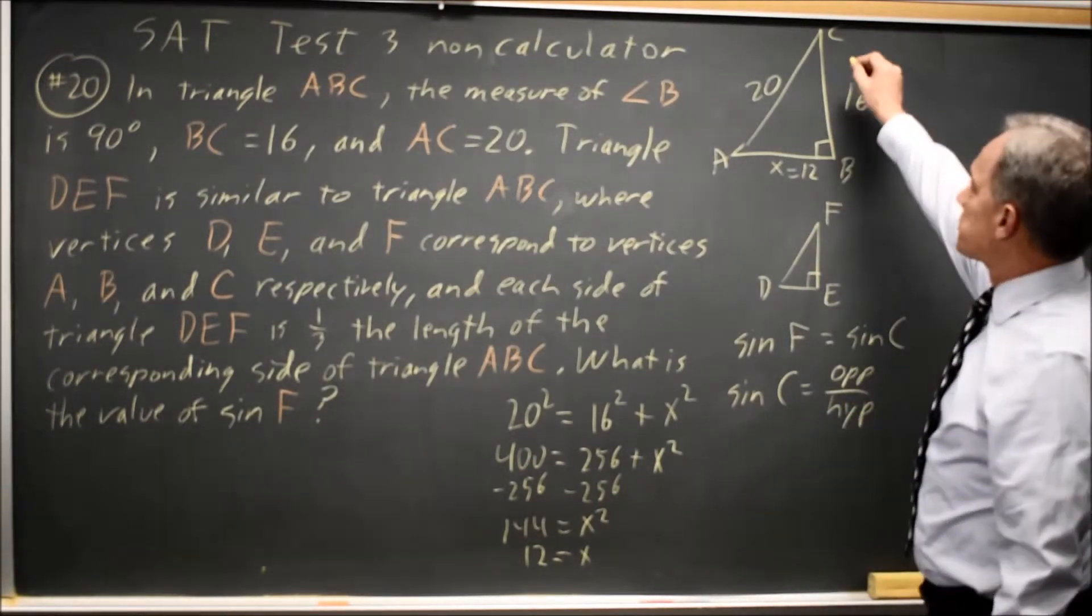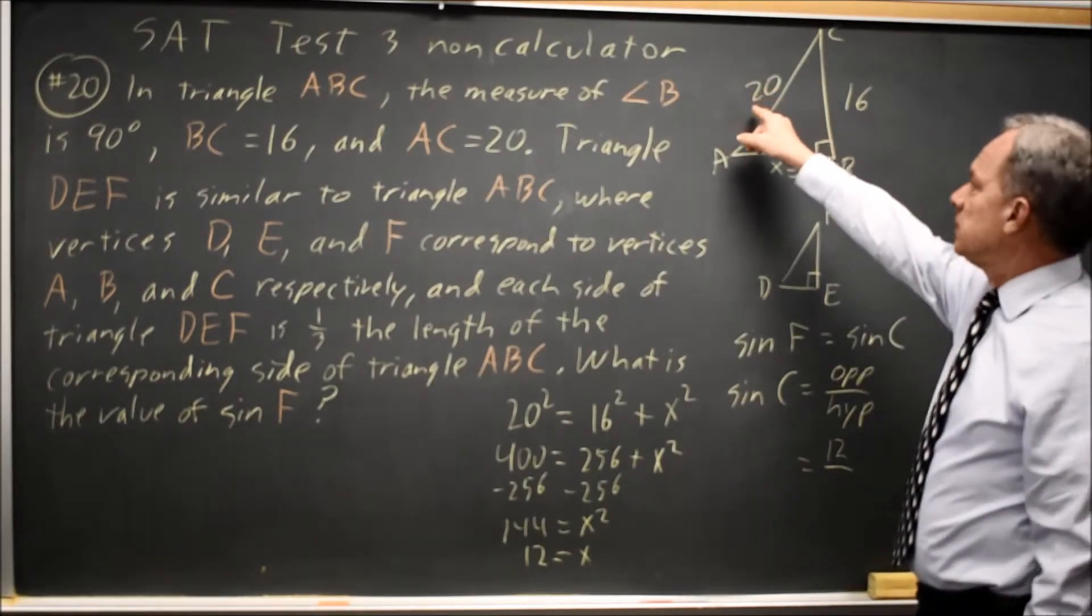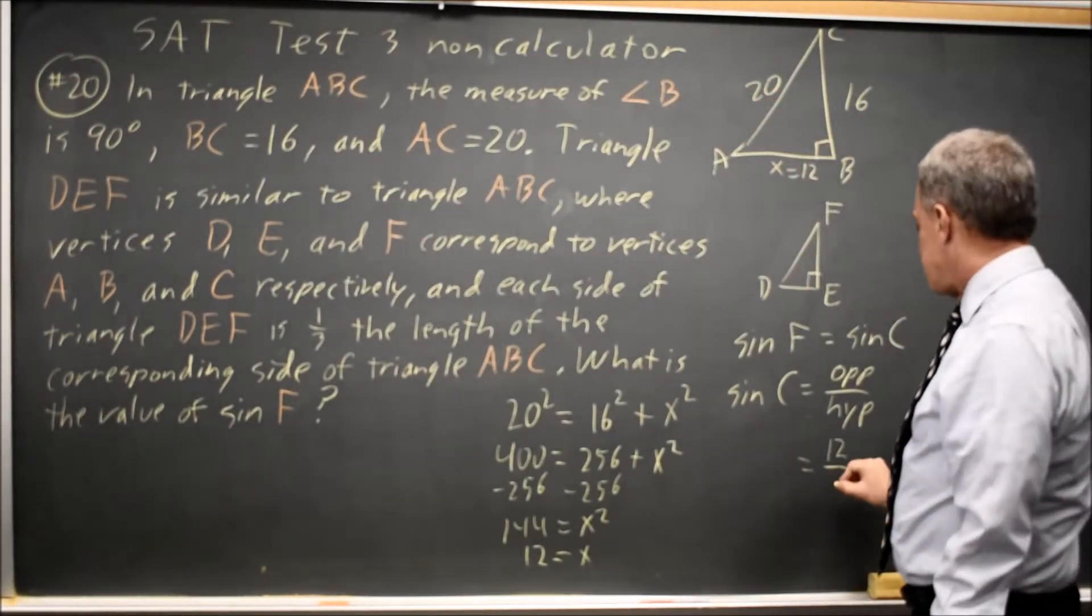The side opposite angle C is 12. The hypotenuse of this triangle is the side opposite the right angle, the longest side, that's 20.